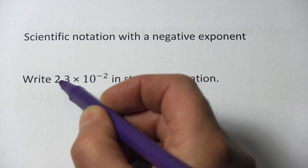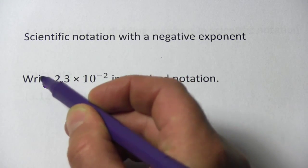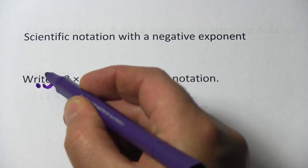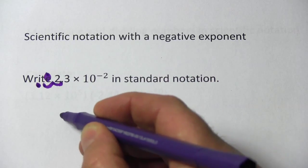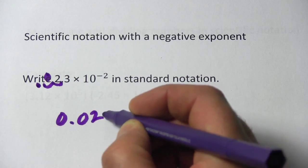So I'm going to move it 2 to the left, so 1 and 2, and my decimal point will go here, and then I fill in with zeros. So this is 0.023.